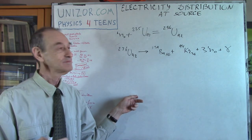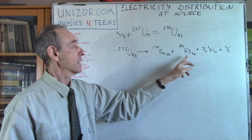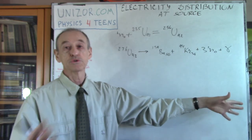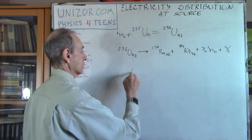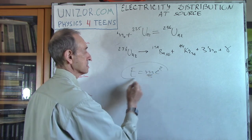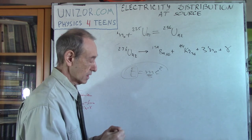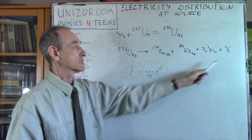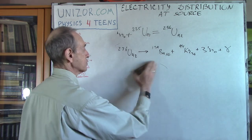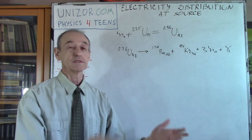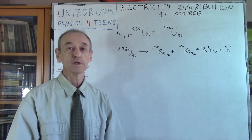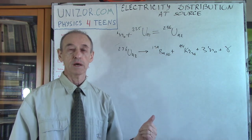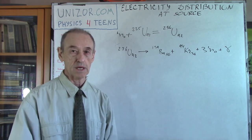Every breakage releases gamma radiation and heat. Why is heat released? If you add up the mass of the products — barium, krypton, and neutrons — it is less than the mass of the original uranium. The missing mass is converted into radiation according to Einstein's famous formula E = mc², where m is the mass deficiency and c is the speed of light. That energy — gamma radiation and heat — is used to boil water. From there it goes exactly as with coal: boiling water produces steam, steam hits turbines, turbines rotate, and generators produce electricity using electromagnetic induction.